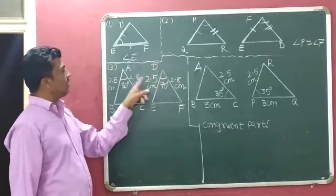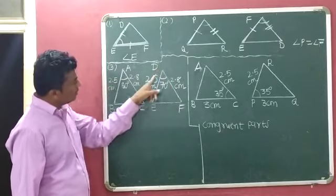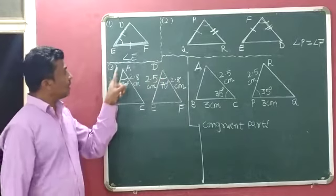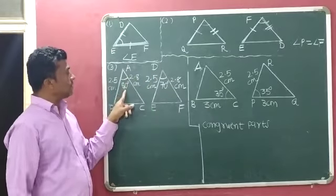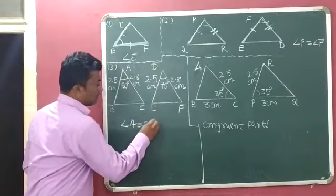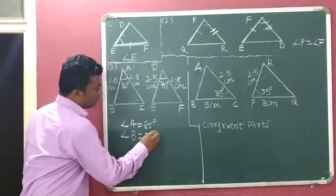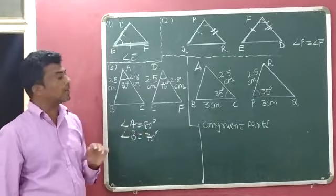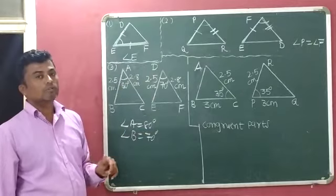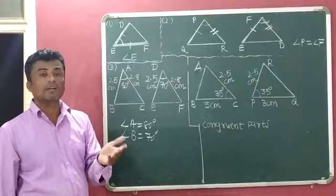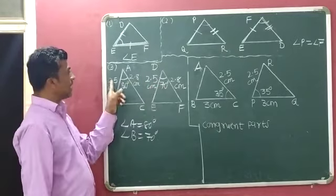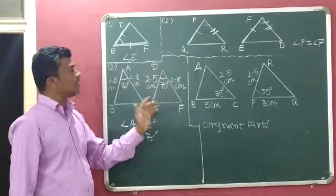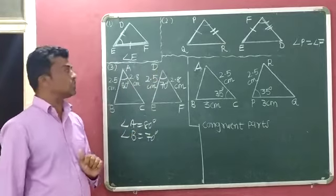AB's corresponding side is DE and they have the same length. AC's corresponding side is DF and they also have the same length of 2.8 cm. But angle A's corresponding angle is angle D — angle A measures 80° and angle D measures 70°. According to the SAS congruence criterion, the given triangles are not congruent to each other because their corresponding angles have different measurements: 80° and 70°. So triangle ABC and triangle DEF are not congruent to each other.